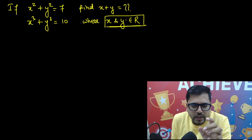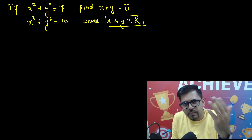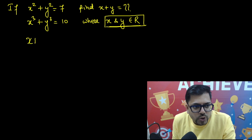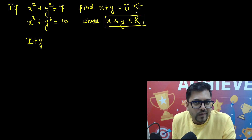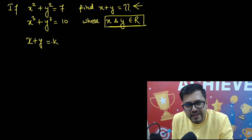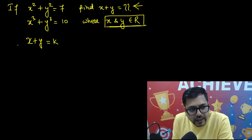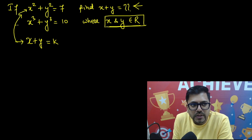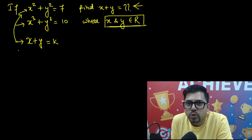So this is a very simple method. If you apply it, you will be able to solve all of these types of questions. What you have to do is assume x plus y — the value which you have to find — as some variable. Say for example we assumed k. Now, whatever is given to you, try to reach from this equation to the square or to the cube part.